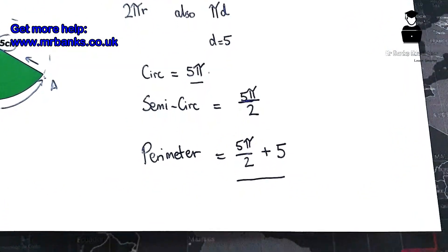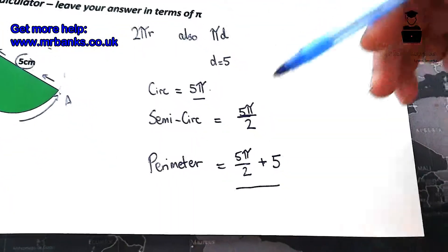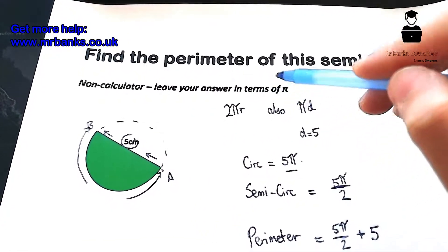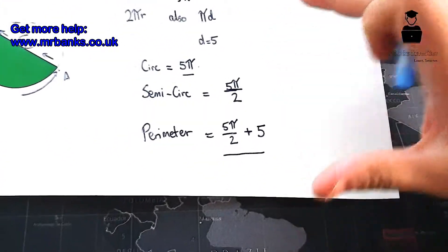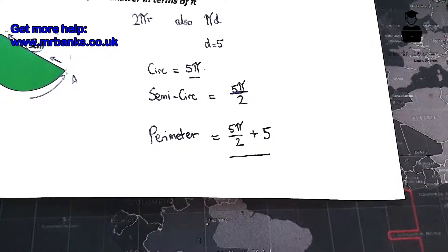And that right there is the end of the question. That is our answer, and it's as simple as that. You might be thinking surely that can't be the answer - that looks more confusing than it did up there - but that is actually the answer because it's asking us to leave our answer in terms of π.